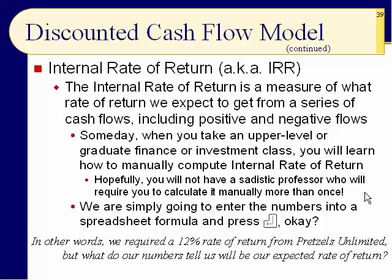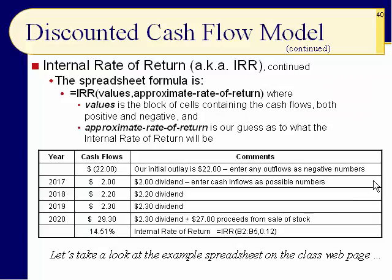That's why we have computers. We simply enter the numbers into a spreadsheet formula and press Enter. We required a 12 percent rate of return from Pretzels Unlimited, but what do our expected numbers tell us we'll actually get? Here is the spreadsheet — we add time zero, entering the $22 as a negative number (shown in parentheses, which is how we show negative numbers in business and accounting). Then enter cash inflows as positive numbers.